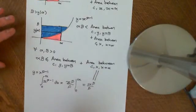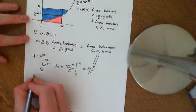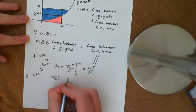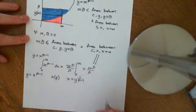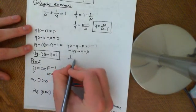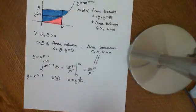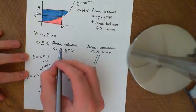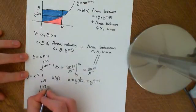Now for the area between the curve, the y-axis, and y equals beta, we need to invert the function. Since y equals x to the p minus 1, we get x equals y to the power of 1 over (p minus 1). Recalling our conjugate exponent result, 1 over (p minus 1) equals q minus 1. So x equals y to the q minus 1, and this area equals the integral from 0 to beta of y to the q minus 1 dy.